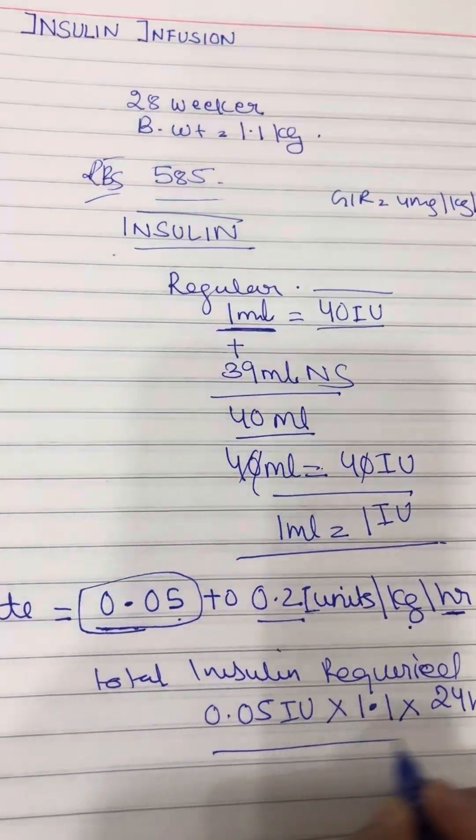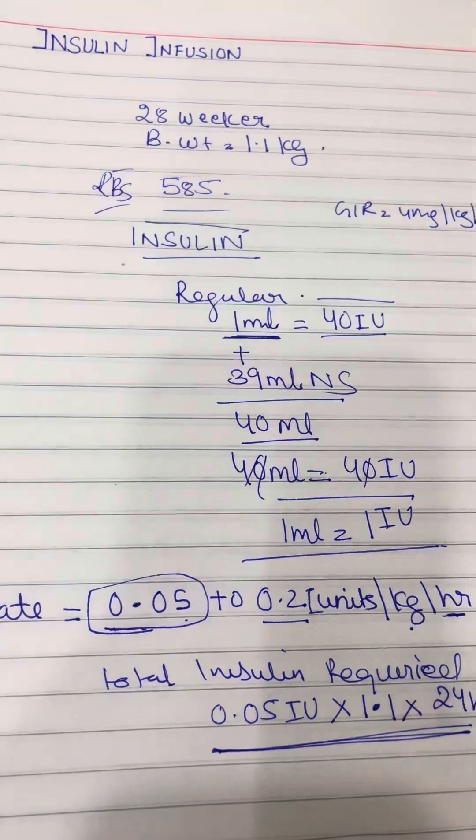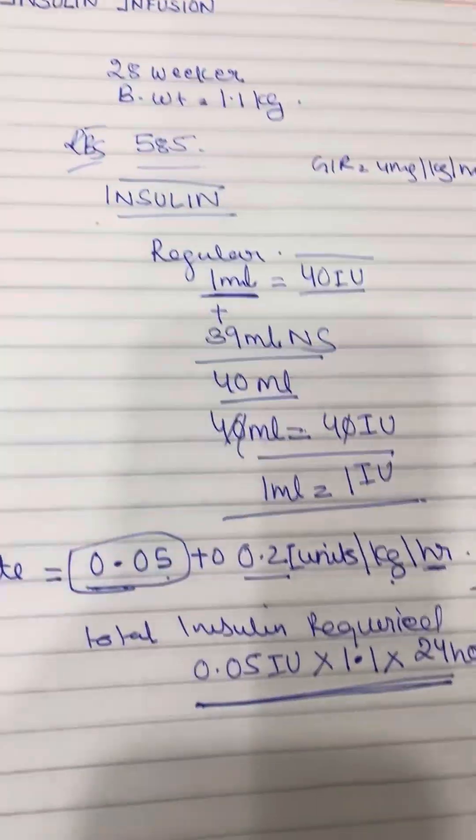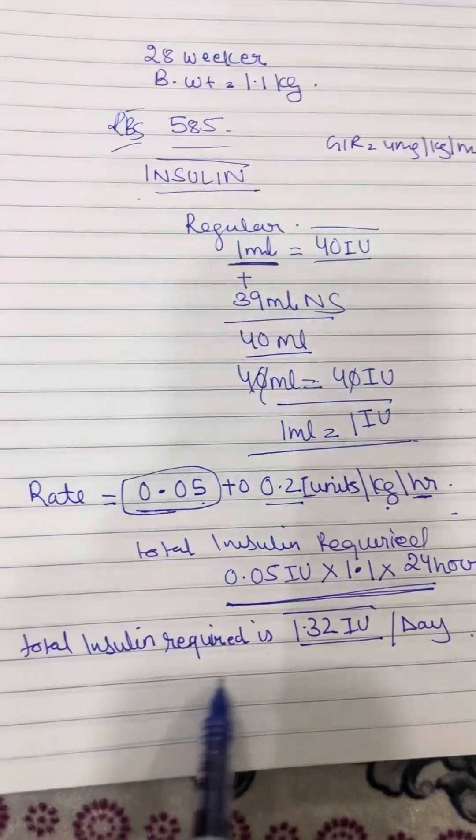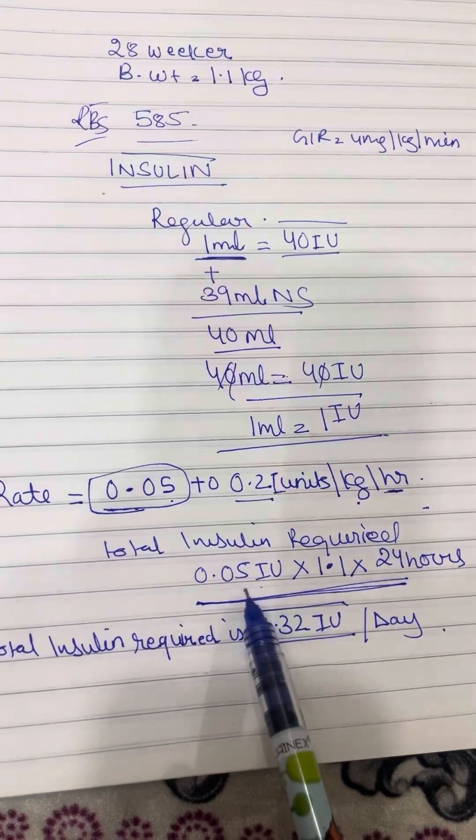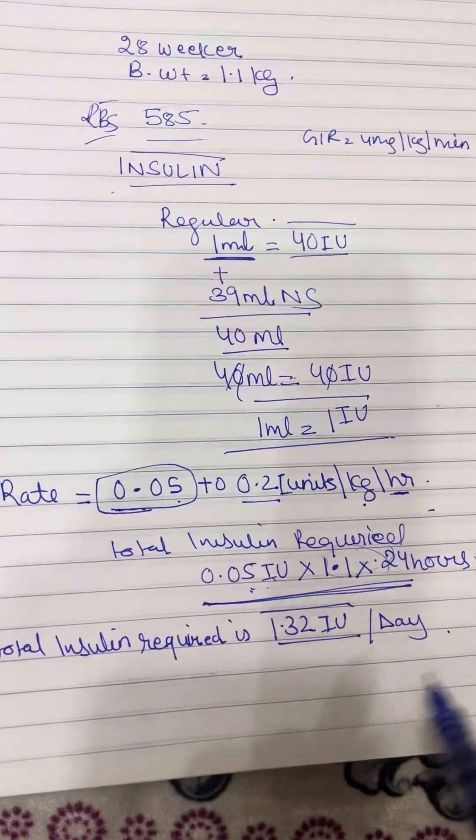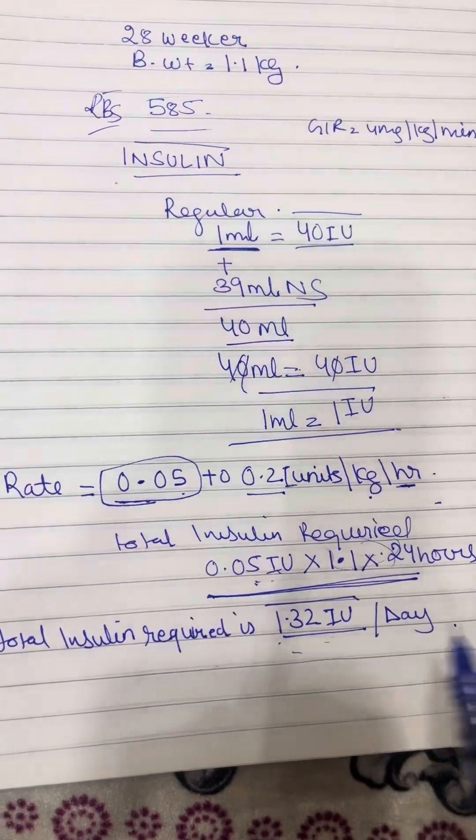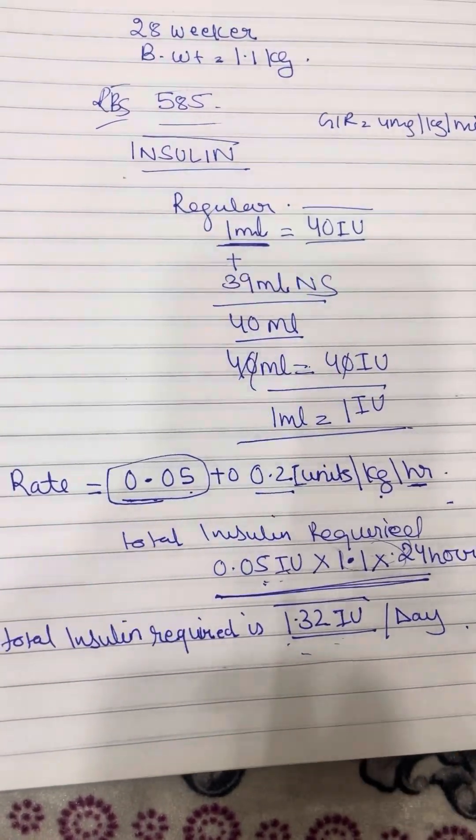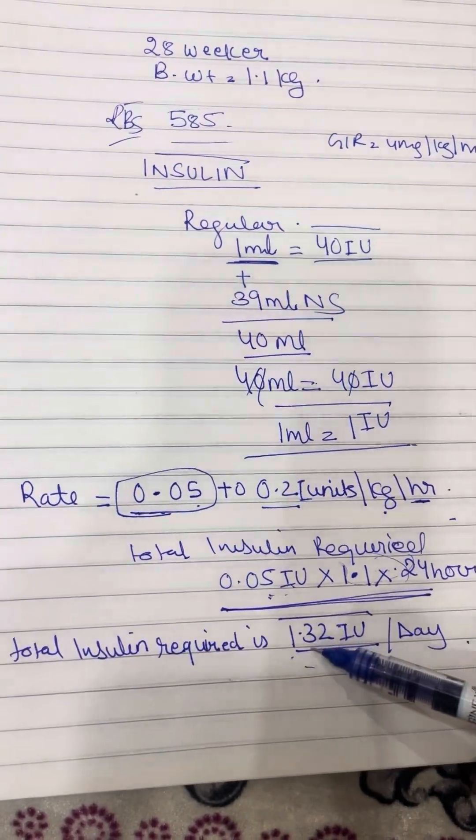This will give me the total amount of insulin that the baby will be needing. After the multiplication of the rate times the weight times the total number of hours, 1.32 international units of insulin is to be given to the baby in the whole day.